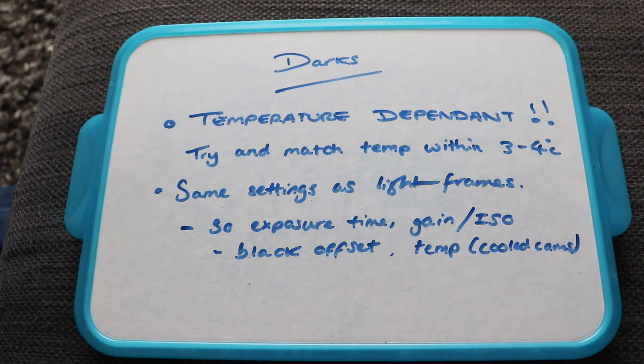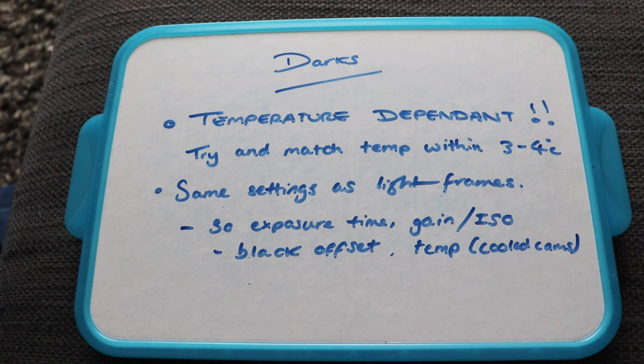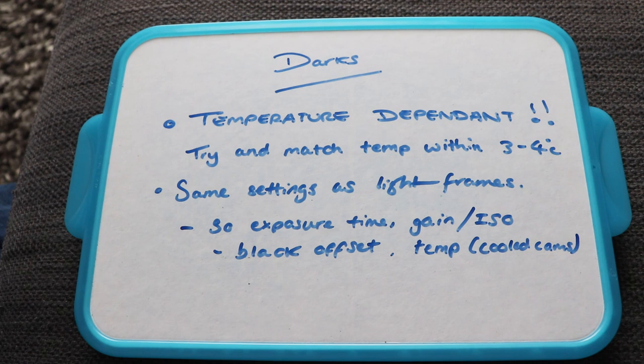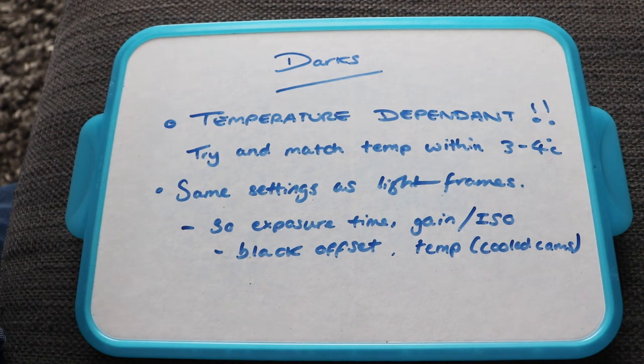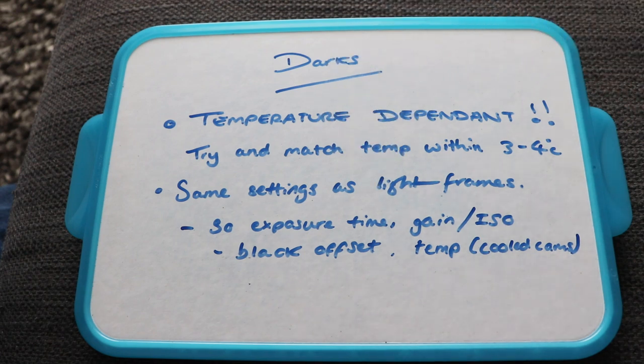And that's because darks are there to correct for that thermal noise that builds up as you carry out an exposure. But it's also important to have exactly the same settings as your light frames. So that's like exposure time. If you're doing a 30 second exposure for a light frame, you need to do 30 seconds for your dark.